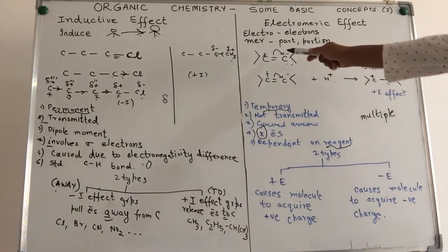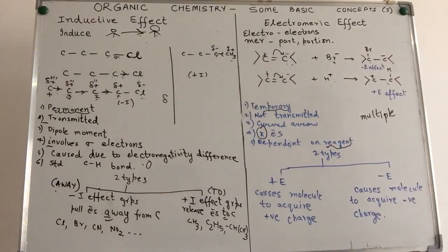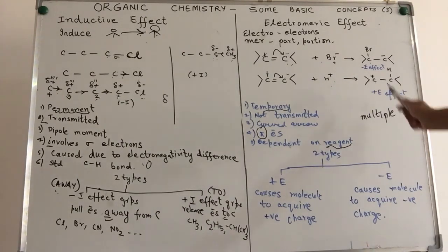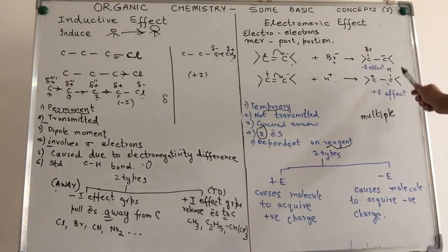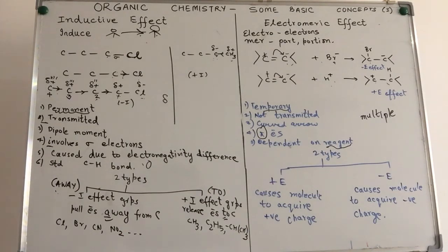If you notice, we are not using straight arrows but curved arrows to indicate the movement of the pi electron cloud, unlike inductive effect. It is not transmitted along a chain — it is settled once the reagent becomes attached. This is an effect which comes into play during the course of a chemical reaction, depending on what reagents you are using and what the reaction conditions are, which will decide the electromeric effect.